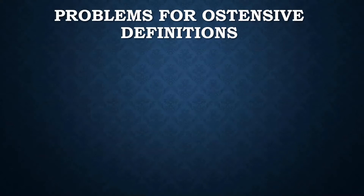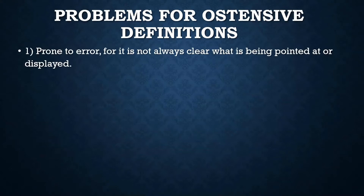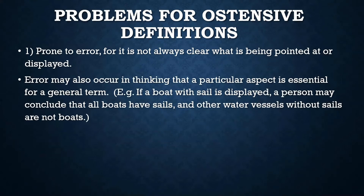There are some problems and limitations of ostensive definitions. For one thing, these are prone to error — it's not always clear what's being pointed at or displayed. Error can also occur when somebody thinks that a particular aspect is essential for a general term. For example, if somebody shows a boat that has a sail, the person may conclude that all boats have sails, and if other water vessels don't have a sail, then it's not a boat.